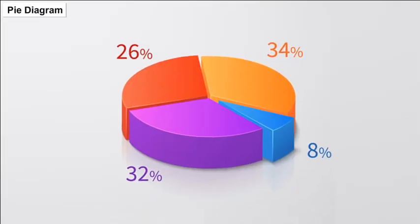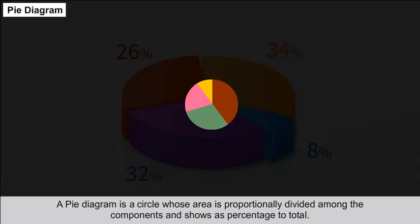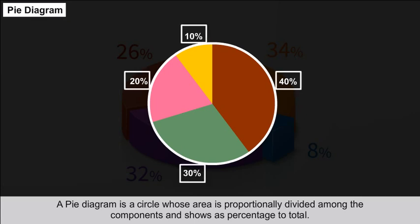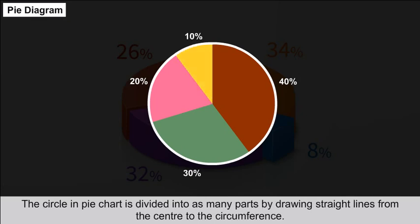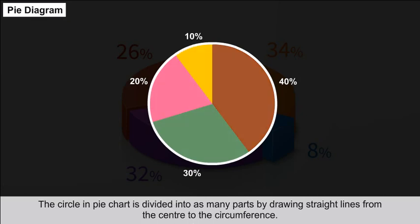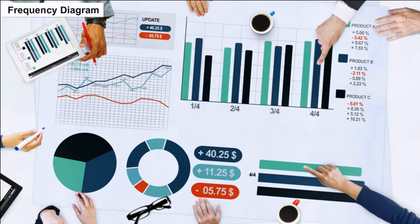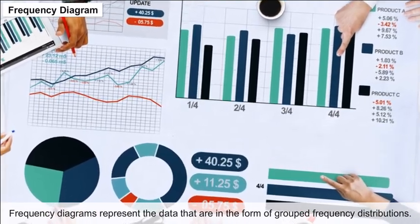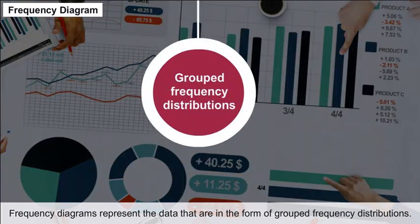Pie Diagram: A pie diagram is a circle whose area is proportionally divided among the components and shown as a percentage of the total. The circle in a pie chart is divided into as many parts as needed by drawing straight lines from the center to the circumference.